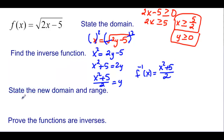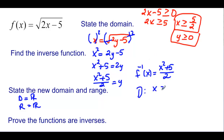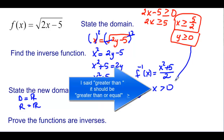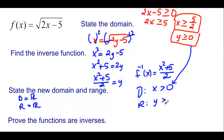State the new domain and range. You would think the domain is all reals because you can plug any x in, add 5, and divide by 2. But it can't be that, because my function was restricted on both x and y. So I come back and say my domain is x is greater than or equal to 0. And my range will be y is greater than or equal to 5/2.